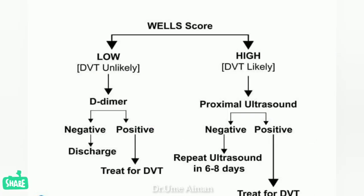The Wells Score flowchart: if DVT is unlikely (low score), perform a D-dimer test. If D-dimer is negative, discharge the patient. If positive, treat for DVT. If DVT is likely (high score), perform proximal ultrasound. If the ultrasound is negative, repeat it in six to eight days and reassess. If positive, treat for DVT.